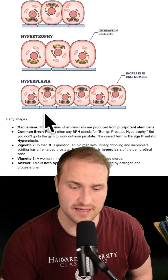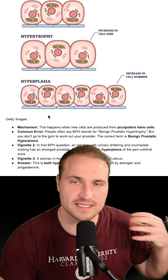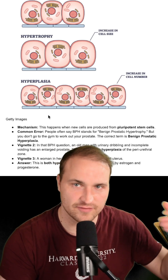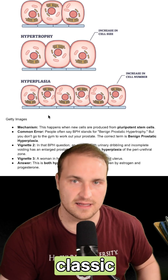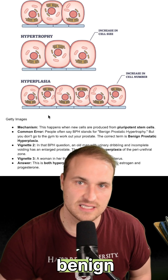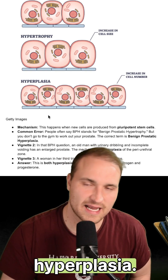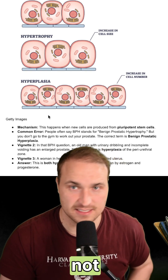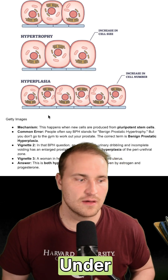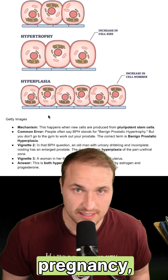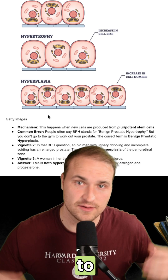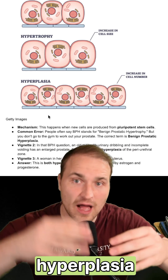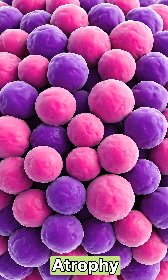Hyperplasia, on the other hand, is an increase in cell number, driven by stem cells. The classic example is benign prostatic hyperplasia. This is not hypertrophy. Under things like pregnancy, the uterus is going to undergo both hyperplasia and hypertrophy.